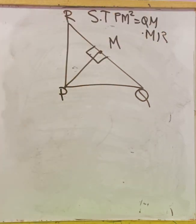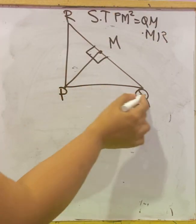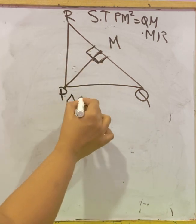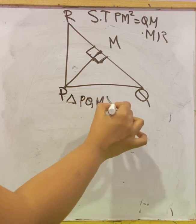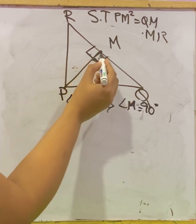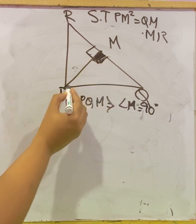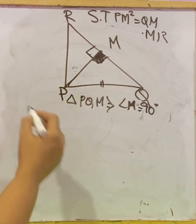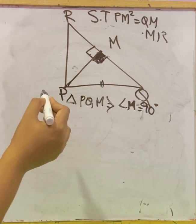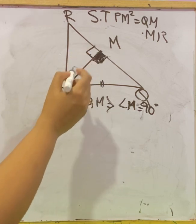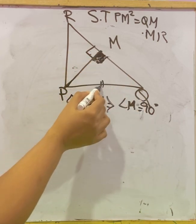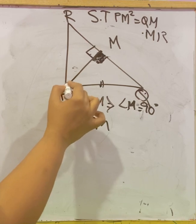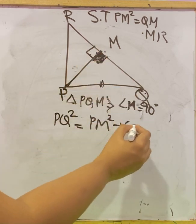To prove this, first consider triangle PQM. Since angle M = 90°, in △PQM right-angled at M, the side opposite the right angle is the hypotenuse. So by Pythagoras theorem: PQ² = PM² + QM², where PQ is the hypotenuse, PM is the altitude, and QM is the base.